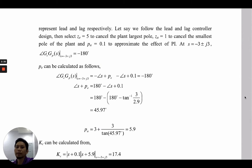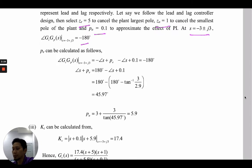Let's say we select ZE equals 5 to cancel the plant's largest pole, and ZA equals 1 to cancel the smallest pole of the plant. Then we select PA equals 0.1 to approximate the effect of PI. At s equals negative 3 plus minus j3, we know that the closed-loop poles will result in 180 degrees of angle.